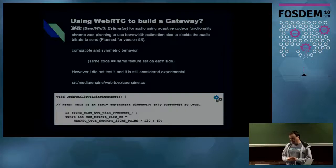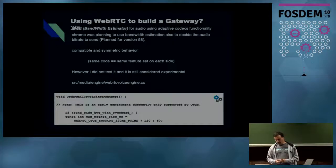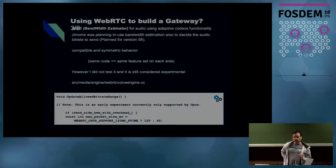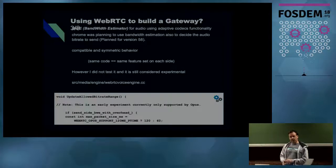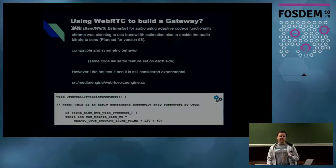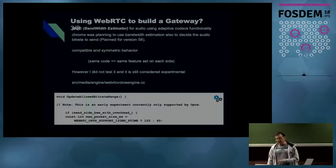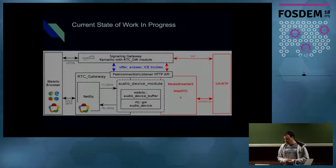It doesn't seem like the bandwidth estimator is fully active for audio yet — I didn't have time to test it — but I can see it's there in the code. Also, Opus was changed recently to support 120-millisecond frames natively. In Opus 1.2 you can generate 120ms frames without faking it by packetizing two 60ms frames. This shows they know what's going on. I'm sure they also have good collaboration with Jean-Marc Valin. Opus is free and well-integrated in many other software.